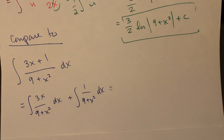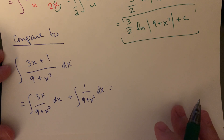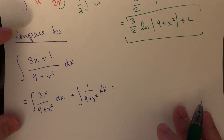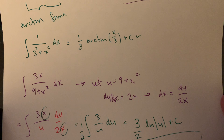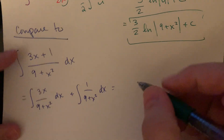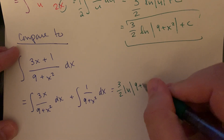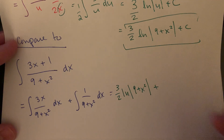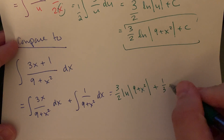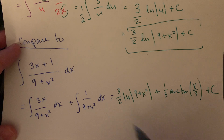We've split fractions before, usually with a single term on the bottom, heading toward power rule. Now that we have more techniques, we can apply them here. These are exactly the two integrals I already worked through. So the answer is three-halves natural log of nine plus x squared, plus one-third arctan of x over three, plus C — just one constant at the end, not two.